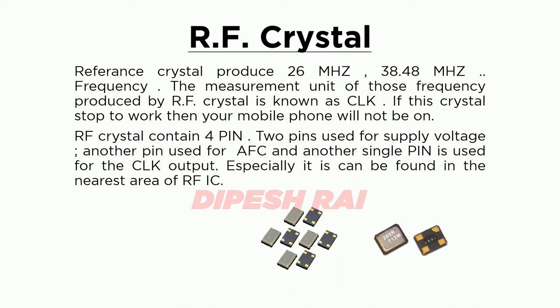The RF crystal contains four pins: two pins are used for supply voltage, one pin is used for AFC (Automatic Frequency Control), and one single pin is used for the CLK output. It can be found in the nearest area of the RF IC on the board.